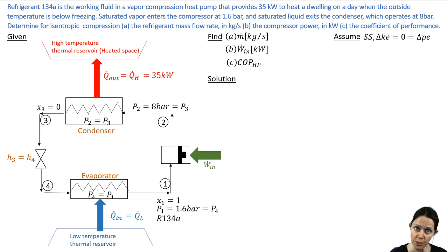All right, so we have a vapor compression refrigeration - or I'm sorry, a vapor compression heat pump. It provides 35 kilowatts of heat to a dwelling on a day when the temperature is below freezing. I've drawn my vapor compression cycle. It looks like a vapor compression refrigeration cycle, and it is,